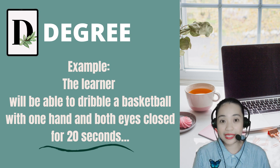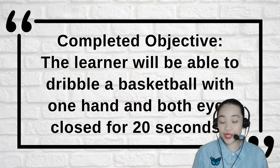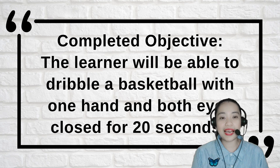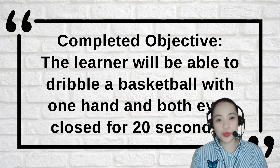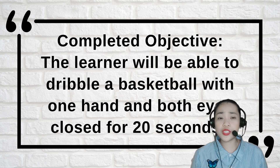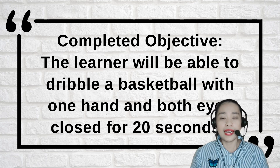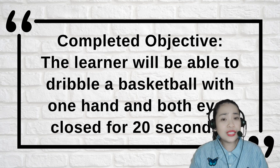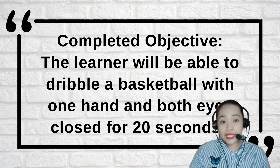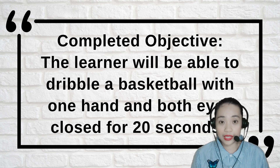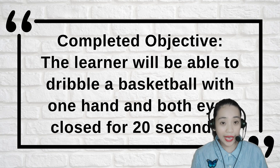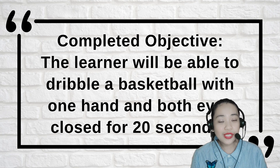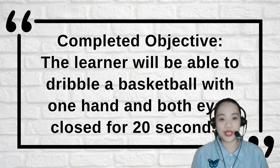Here is the completed objective: The learner will be able to dribble a basketball with one hand and both eyes closed for 20 seconds. As you can see, the objective is very descriptive. It tells the student exactly what they need to do in order to meet the criteria. Using this method of writing objectives will help your students focus on what they need to learn.